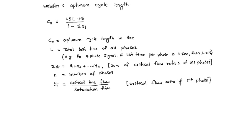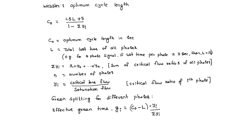Now, green splitting—how to split the green time for different phases? Effective green time Gi equals C0 minus total loss time multiplied by yi divided by sigma yi. For every phase, we can find effective green time using this formula.